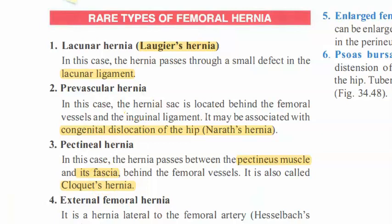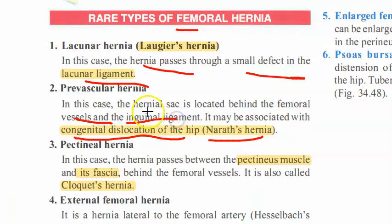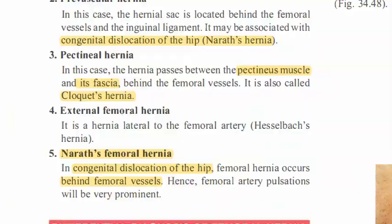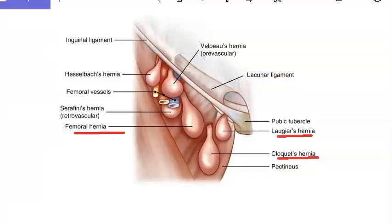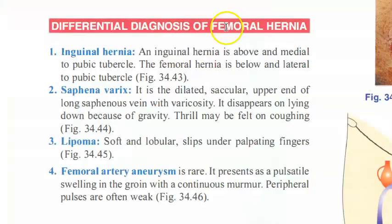Rare types of femoral hernia in the same region include: Laugier's hernia, where there is a defect in the lacunar ligament and the hernia passes through it. Narath's hernia is associated with congenital dislocation of the hip — the hernia is located behind the femoral vessels and the inguinal ligament, not passing through the femoral ring or canal.